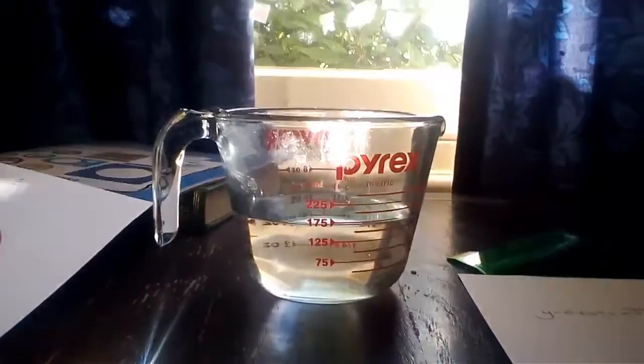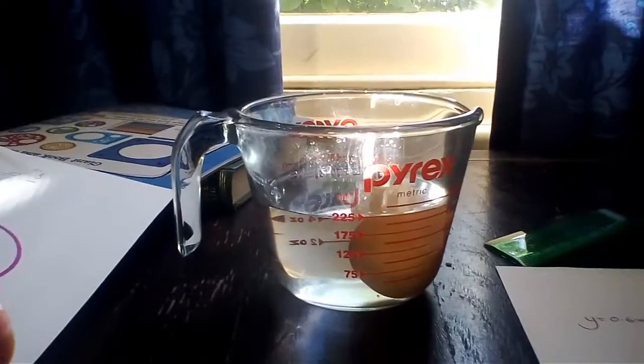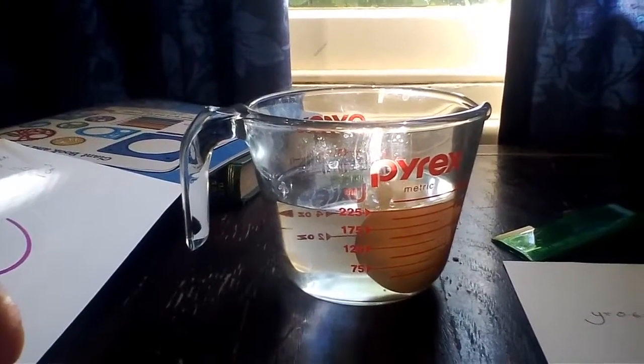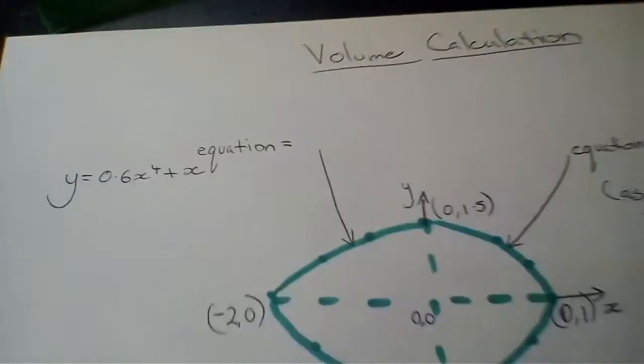Starting at about 175 mils, we put the egg in, goes a little bit past 225, so it's about 50 mils volume in the egg. So we can check that with our calculations.